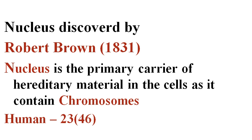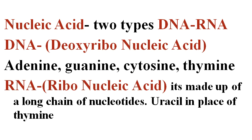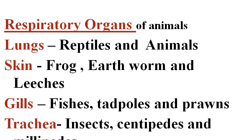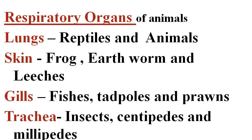The nucleus is the primary carrier of hereditary material in the cells as it contains chromosomes. In humans there are 23 pairs of chromosomes, that is 46 chromosomes. Nucleic acids are of two types: DNA and RNA. DNA is deoxyribonucleic acid and consists of adenine, guanine, cytosine, and thymine. RNA is ribonucleic acid, made up of a long chain of nucleotides, and uracil is in the place of thymine.